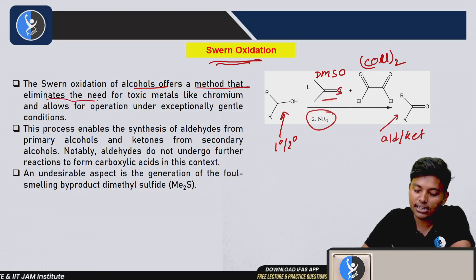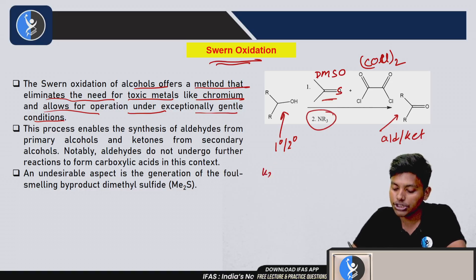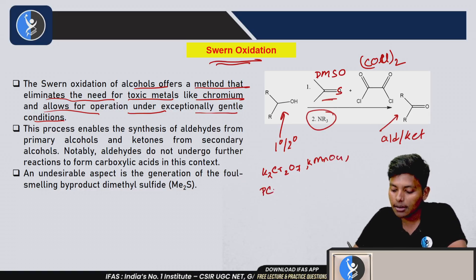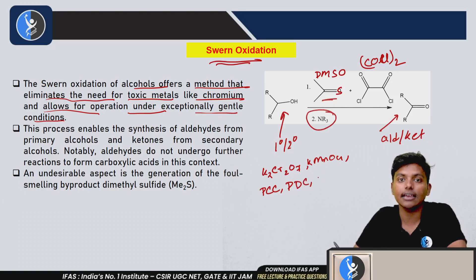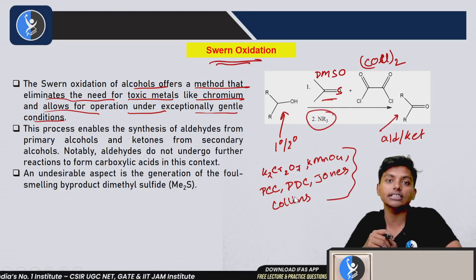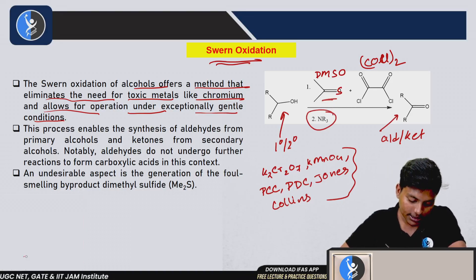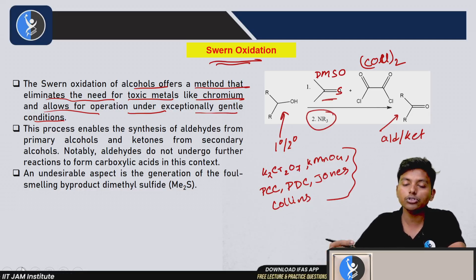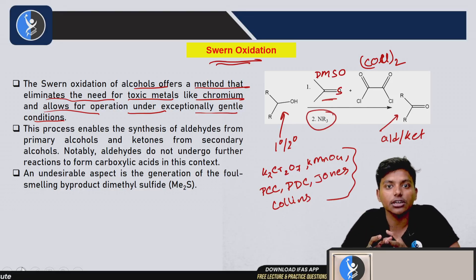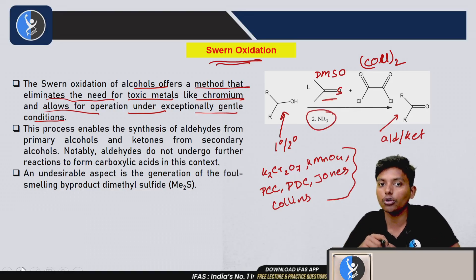Swern Oxidation offers a method that eliminates the need for toxic metals like chromium and allows operation under exceptionally gentle conditions. In many oxidation reactions we use K₂Cr₂O₇, KMnO₄, PCC (pyridinium chlorochromate), PDC, Jones reagent, or Collins reagent — in every reagent we use metallic conditions. We know that such metallic conditions are not good for health, so to get rid of hazardous metallic conditions we use this reaction.